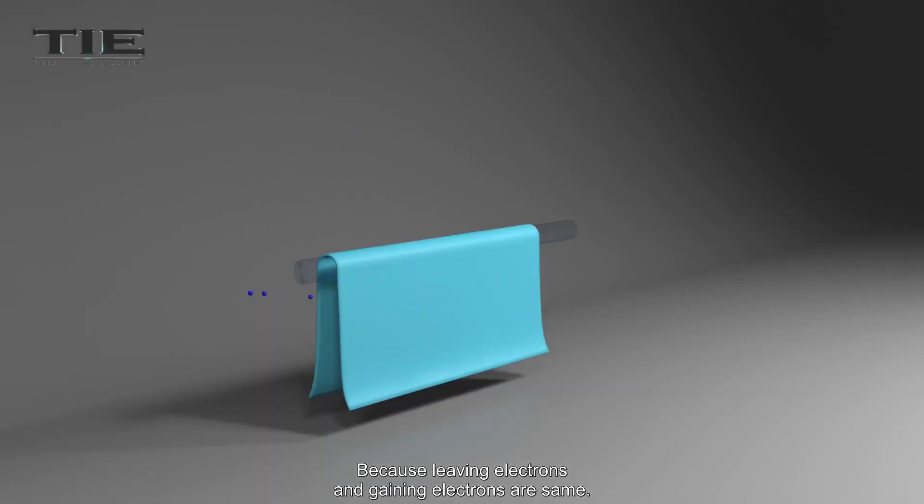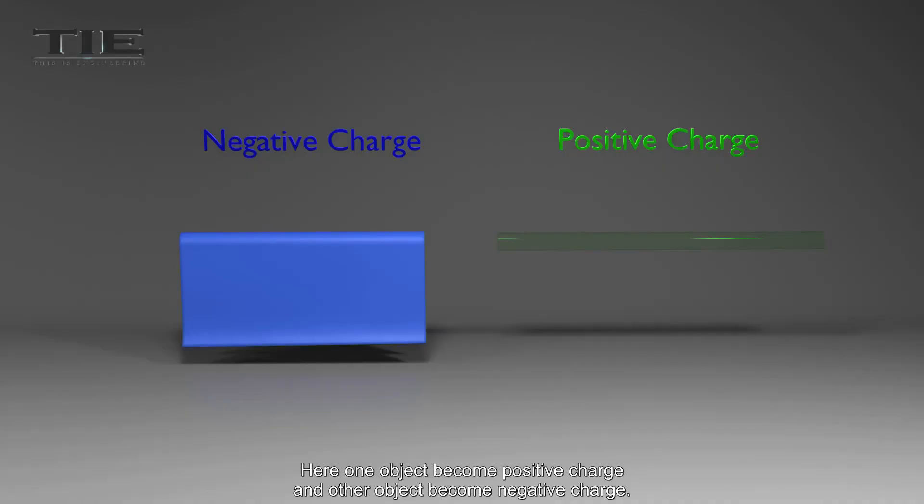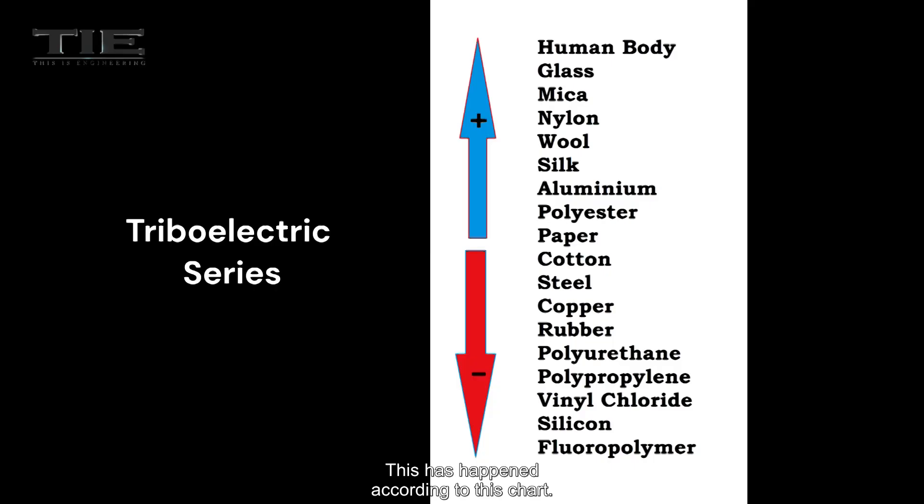Because leaving electrons and gaining electrons are the same. Here, one object becomes positive charge and the other object becomes negative charge. This is happened according to this chart. This is called the triboelectric series. When any two objects rub, if the object is nearer the top of the series, the object takes positive charge. And if the object is nearer the bottom of the series, the object takes negative charge.